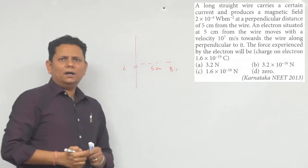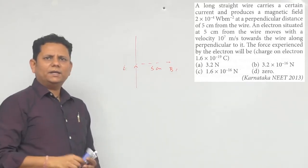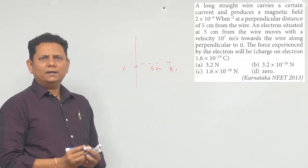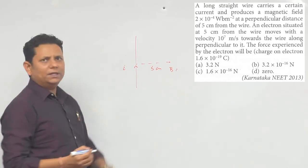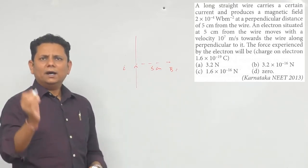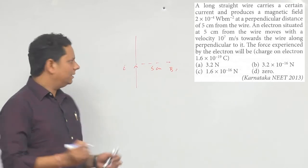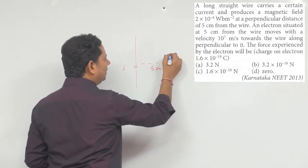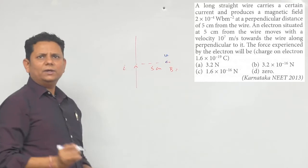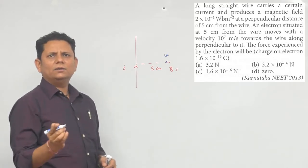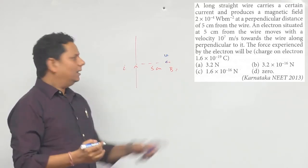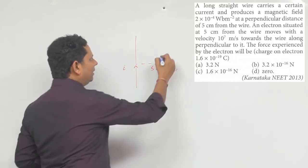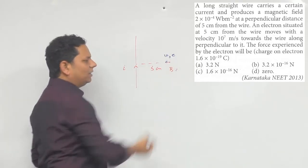We have a wire, and at 5 centimeter distance from this wire, we have released an electron with velocity v. So v is the velocity here, directed towards the wire. We have released the electron in this direction, and its charge is e.